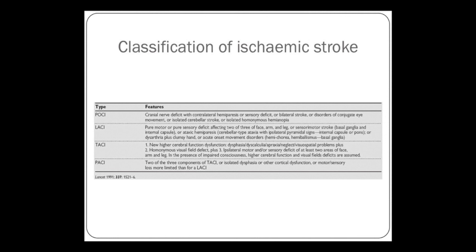Posterior cerebral infarction is caused by disease in the vertebrobasilar circulation — the vertebral arteries and the basilar arteries in the back of the head. That results in problems affecting the occipital lobe and the brainstem. You might have cranial nerve deficits, because all the cranial nerves arise from the brainstem, or sensory-motor deficit, because the motor and sensory tracts run up the brainstem. Or you might have problems with eye movement or cerebellar signs.